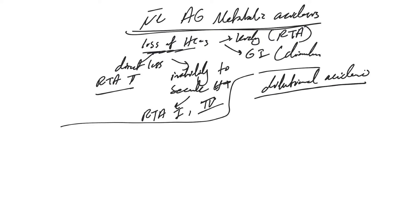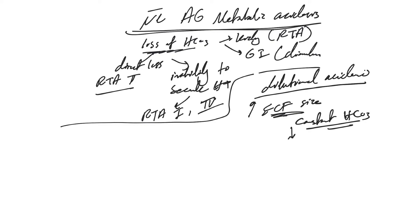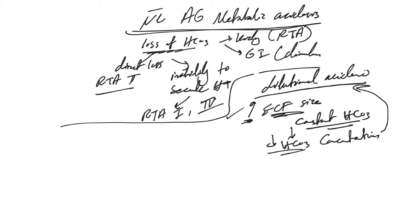There is also something called dilutional acidosis. When you give normal saline — mainly normal saline — you increase ECF size without giving bicarb, so increasing ECF size with a constant HCO3 amount leads to decreased HCO3 concentration. This is the main explanation for why we sometimes see acidosis with normal saline. Lactated Ringer's and other balanced solutions have some bicarb directly or indirectly — the lactate in lactated Ringer's is converted by the liver to bicarb.